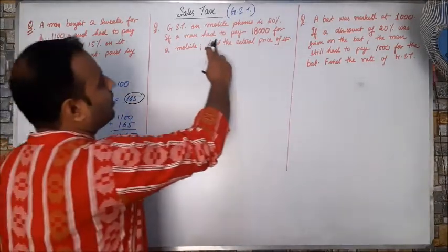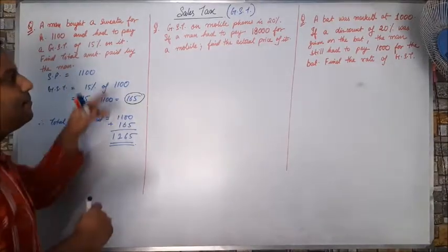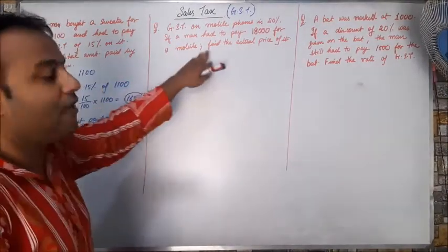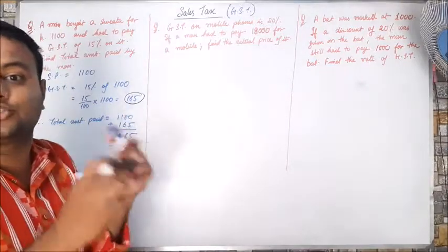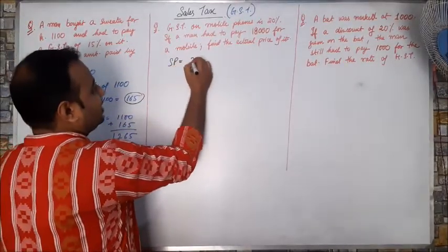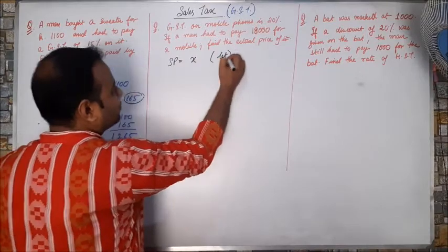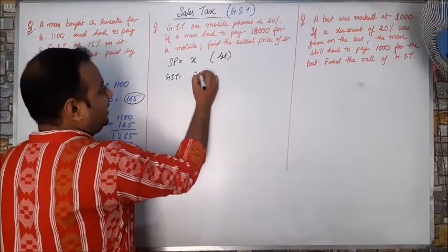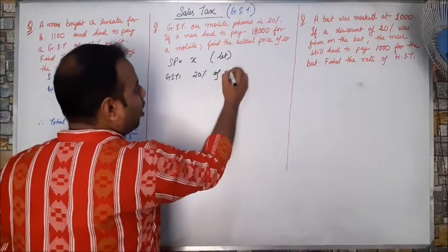Next, GST on mobile phone is 20%. If a man had to pay 18,000 for a mobile, find the actual price of it. What was the actual selling price? The actual selling price is not given. I will take the selling price as X. So what will be the GST? GST will be 20% of X.